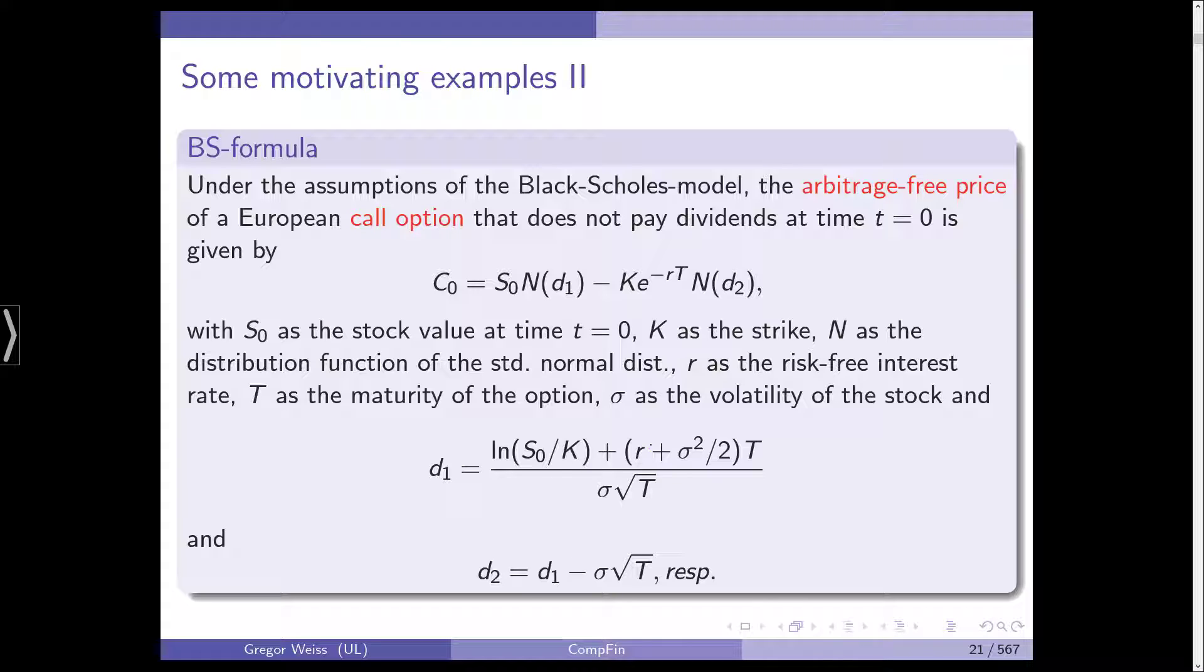D₁ and D₂, as you can see, it includes R, the interest rate, sigma, the volatility of the underlying, T, this is the maturity of the option, and those are basically the parameters.